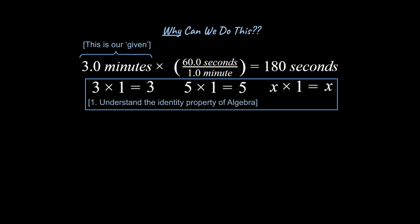This is called the identity property of algebra. So we have to remind ourselves of this. The reason why this is going to be important is because I'm going to prove that we're going to be multiplying.